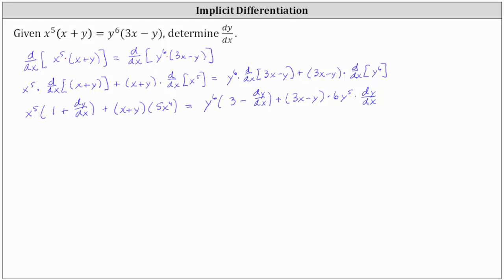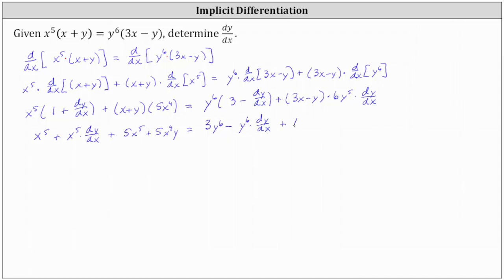And now we need to work on solving this equation for dy/dx. Let's begin by eliminating the parentheses. Distributing x to the fifth, we have x to the fifth plus x to the fifth dy/dx. And then plus distributing five x to the fourth, we have plus five x to the fifth plus five x to the fourth y. Equals on the right, distributing y to the sixth, we have three y to the sixth minus y to the sixth times dy/dx. Plus distributing six y to the fifth dy/dx, we have 18x y to the fifth times dy/dx, and then minus six y to the sixth times dy/dx.